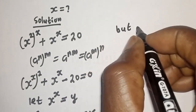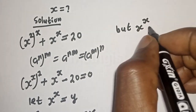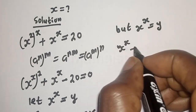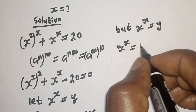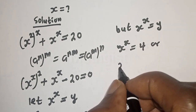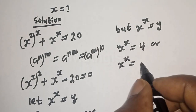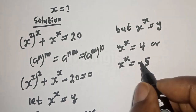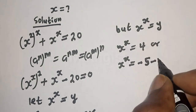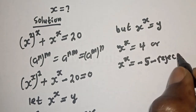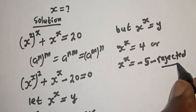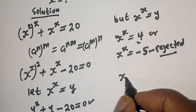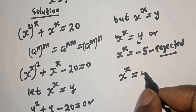Since s raised to power s is equal to y, we have s raised to power s equals 4, or s raised to power s equals minus 5. But this exponential function cannot be equal to a negative value, so minus 5 is rejected. The only valid solution is s raised to power s equals 4.